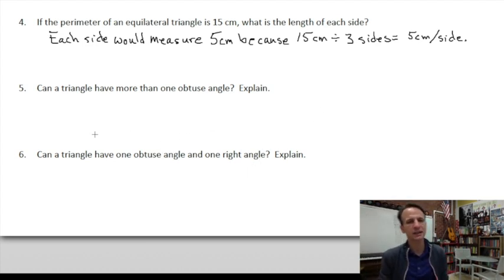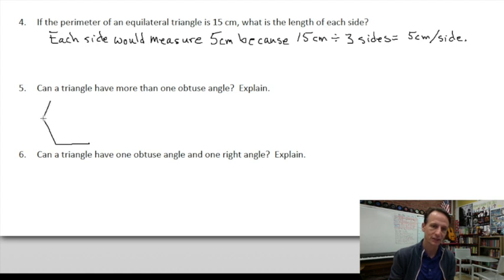Can a triangle have more than one obtuse angle? If you try drawing this - if you draw an angle that is mildly obtuse, you notice right away you have to connect these two sides to have a triangle. You end up with two acute angles. If I try to make another obtuse angle, I'm looking at a quadrilateral at best. I have two obtuse angles here and it does not work because I'm going to end up with a four-sided figure.